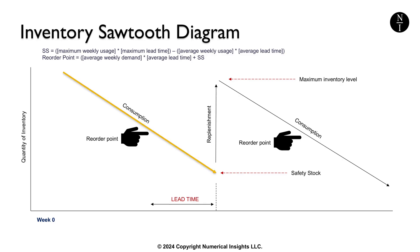Here's how the timing of inventory works. As products are sold or used in production, the inventory level decreases gradually. The downward slope represents the rate of consumption or customer demand. When the inventory level reaches a specific threshold, which we call the reorder point, an order is placed to replenish stock. The reorder point is a number which can be calculated. Ordering at the reorder point helps to ensure that inventory is replenished before reaching zero, i.e. before you become out of stock on that item. When the new stock arrives, inventory levels instantly jump to a higher level. That's why increases in this chart are vertical lines.